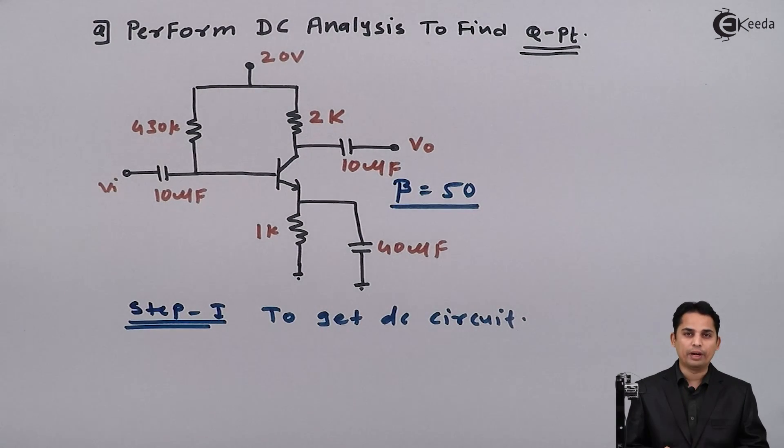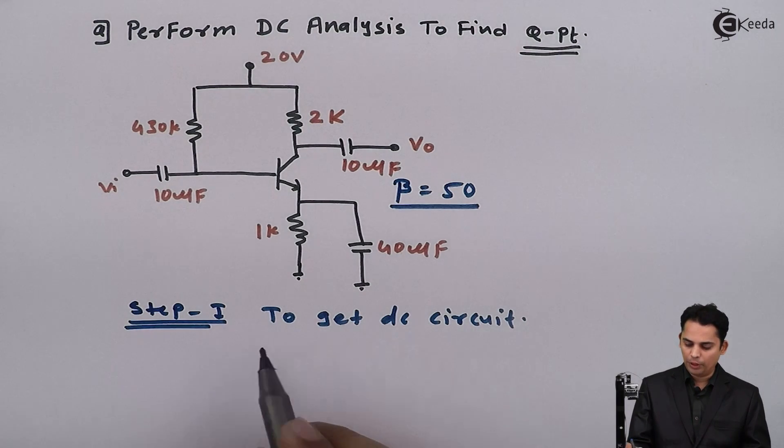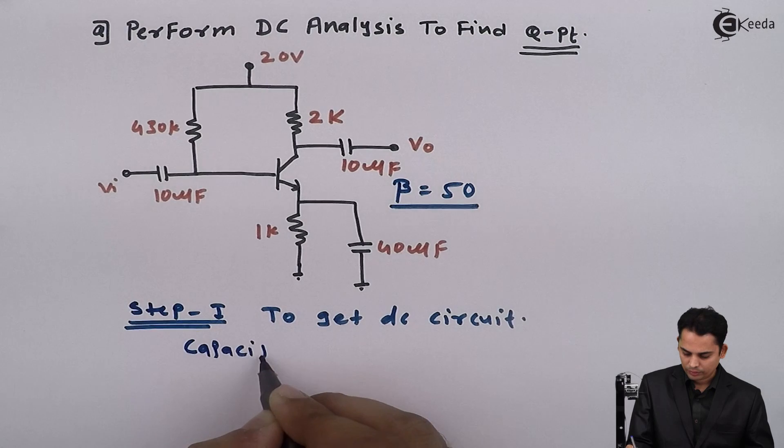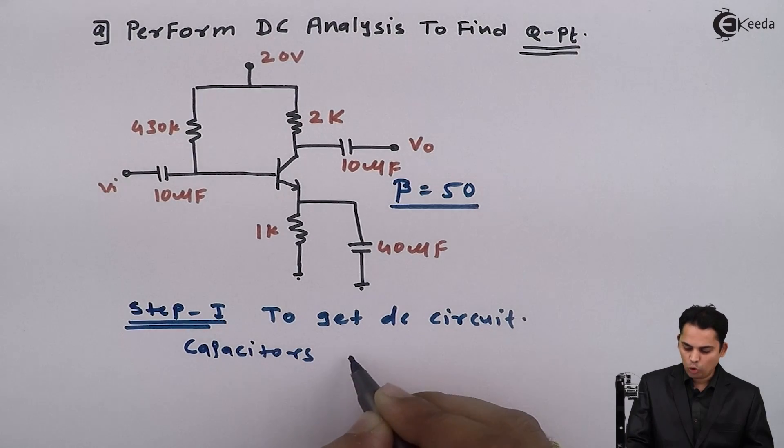In the exam they have asked you to find out Q point of the following circuit. So step 1 will be always to get DC equivalent circuit. We can identify that given problem is based upon fixed bias circuit. So by opening the capacitors we will get DC circuit. Step 1 will be to get DC circuit for that capacitors are open circuit.